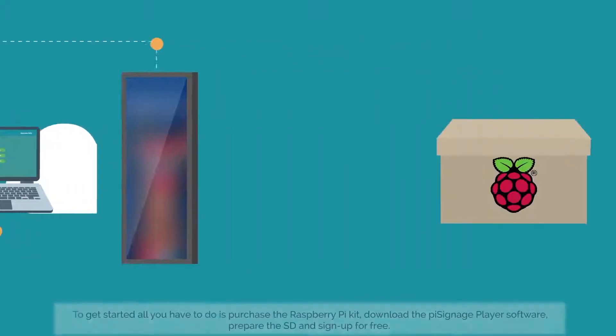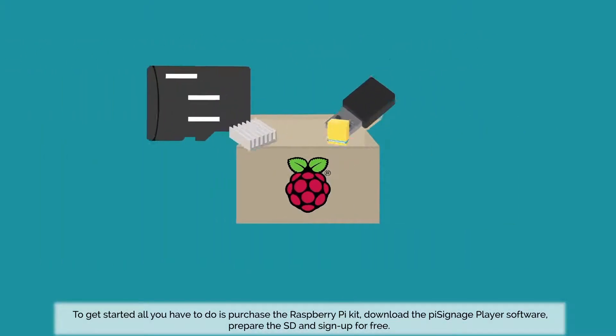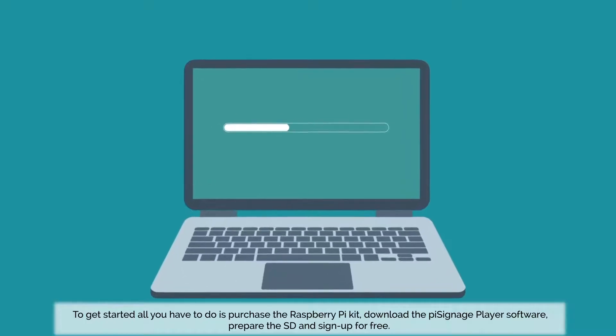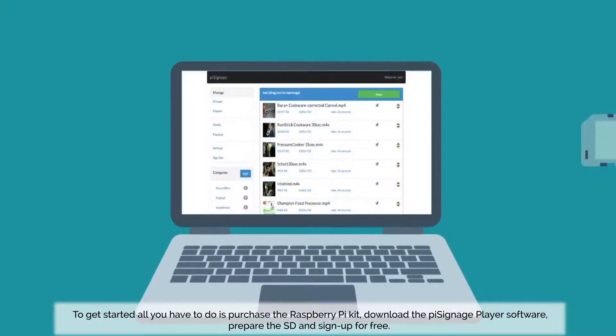Using the hosted service at PiSignage.com, to get started all you have to do is purchase the Raspberry Pi kit, download the Pi Signage player software, prepare the SD card and sign up for free.